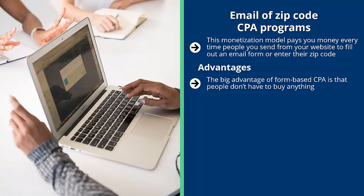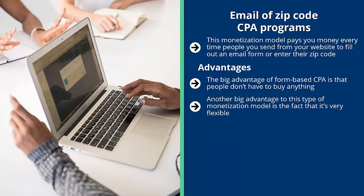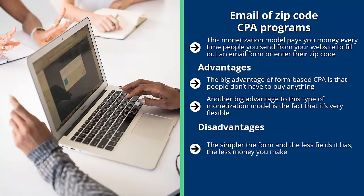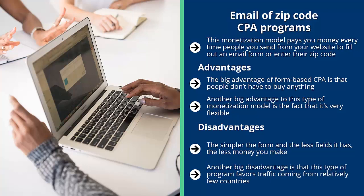There is testing to ensure entries are real and not fraudulent. Another advantage is flexibility — you can drive traffic from your properties to these forms in a variety of ways, as long as it's approved. The disadvantage is that simpler forms pay less, but this is offset by the fact that it's relatively easy to make 25 cents per email collected or 50 cents per zip code — compare that to a few cents per click on AdSense. This model also strongly favors American or British traffic.